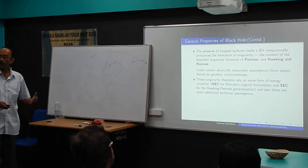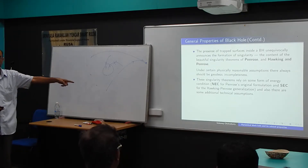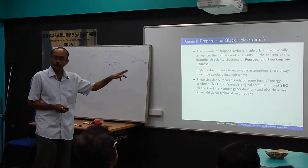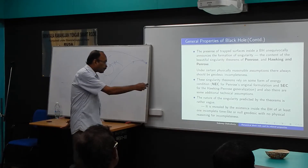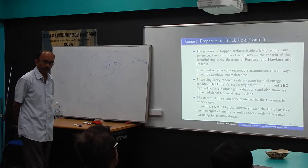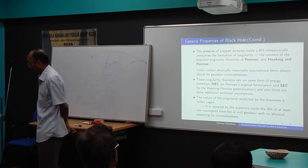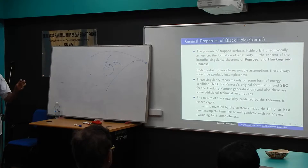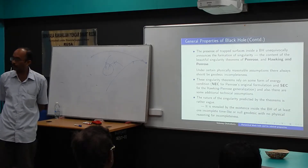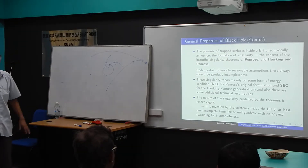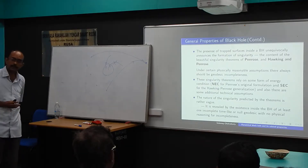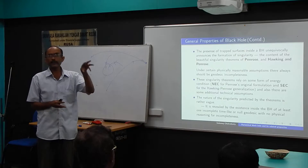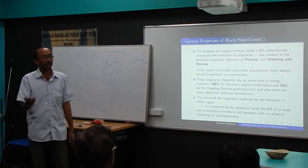They formulated those energy conditions and the singularity theorems using the Raychaudhuri equation. But the nature of the singularity predicted by the theorem is rather vague — they have not predicted whether that singularity will be inside the black hole or totally visible to any observer. That incompleteness remains: they showed that geodesic incompleteness with certain restrictions implies singularity, but they did not say when that singularity is covered by the event horizon or naked.